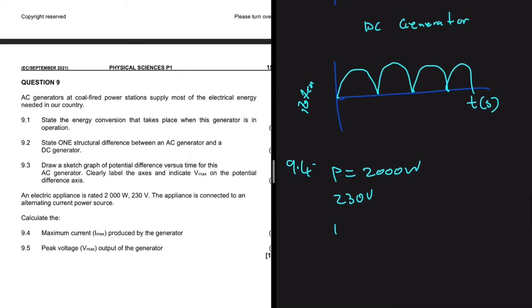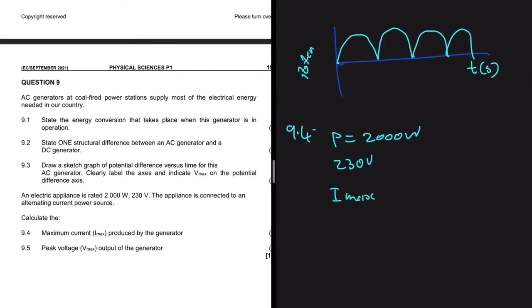And then what we are asked to do is to calculate the maximum current. So we're looking for I-max. So here in electric circuits, we know fully well that the power is equals to the voltage multiplied by the current. But then when we're dealing with an AC generator, we have power average being equals to IRMS multiplied by VRMS. So in the information that we have, we have the power average and we have the VRMS.